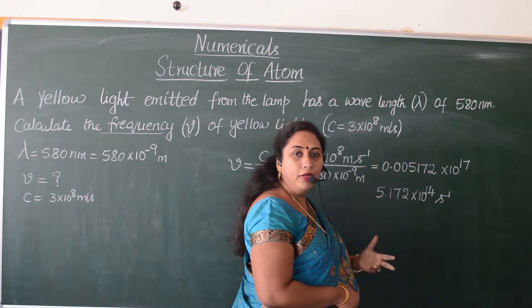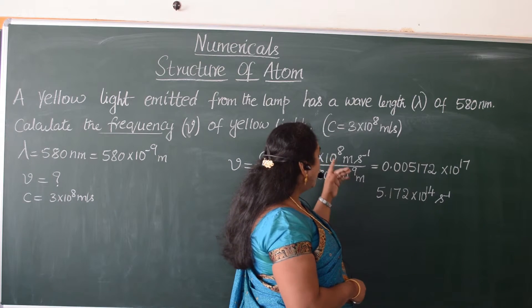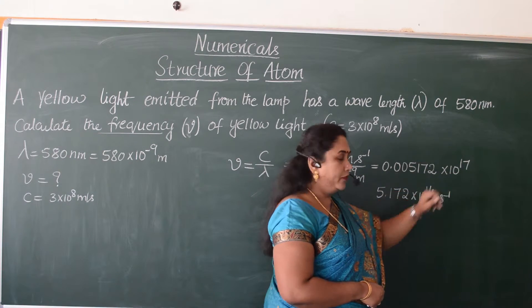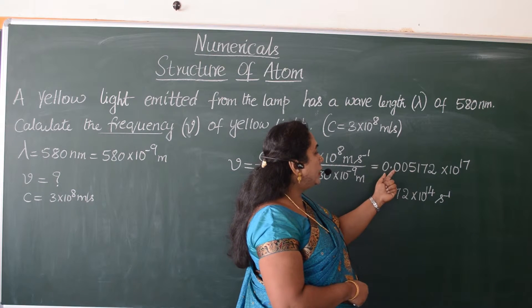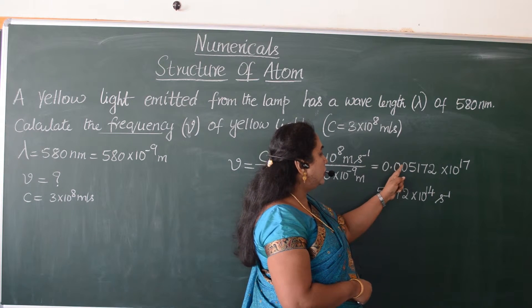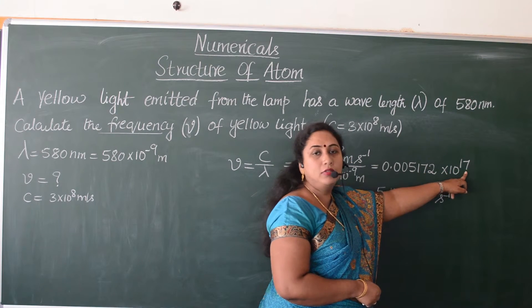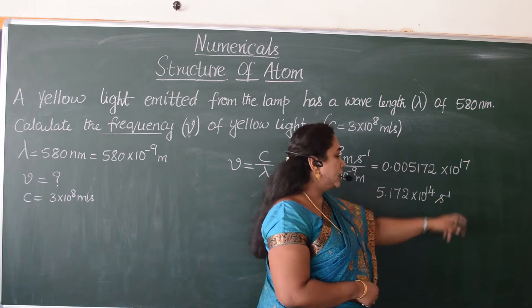Taking minus 9 above, it becomes plus 9, so 8 plus 9 equals 10^17. Now I am moving the decimal 3 places, so when I shift this I have to reduce the power of 10 by 3.